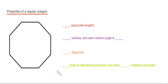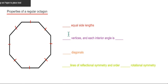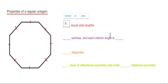So first of all let's have a look at the number of sides. We have one, two, three, four, five, six, seven, eight. So we have eight sides and each side is of equal length.